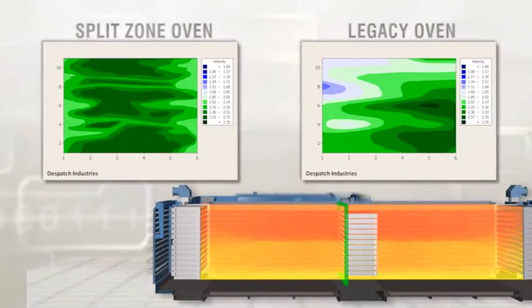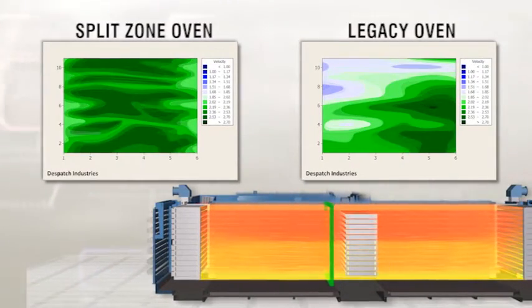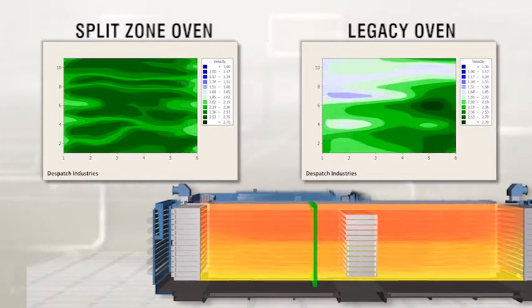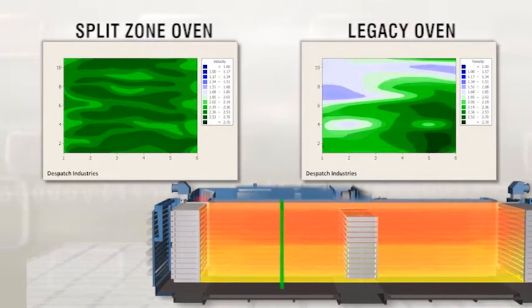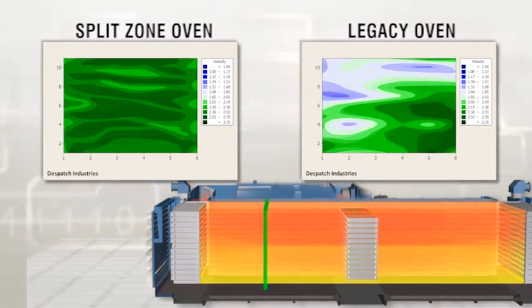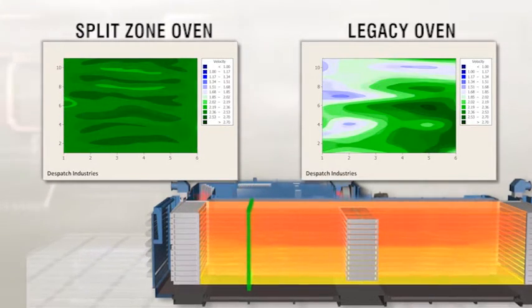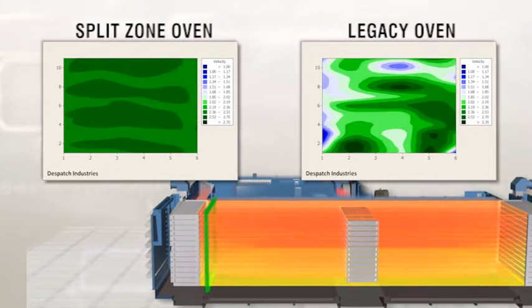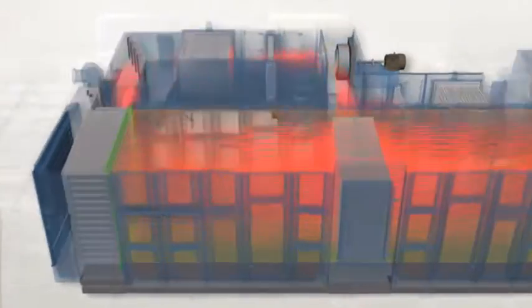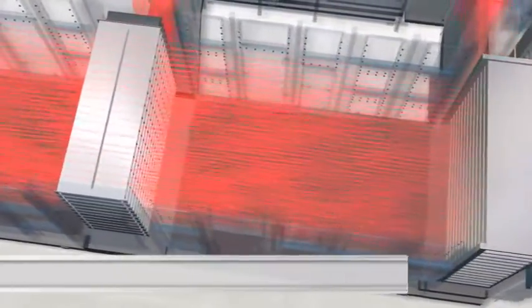The elimination of variance allows you to safely increase the oven temperature, accelerating oxidation without losing control of the exothermic reaction. Improved uniformity and split-zone control allow you to push the temperature in the oven, reducing oxidation cycle time by 25% or more. The split-zone oven was designed to dramatically reduce maintenance requirements.